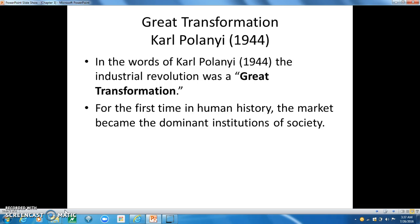In the words of sociologist and historian Karl Polanyi, the Industrial Revolution was a great transformation. What he means by this is that for the first time in human history, the market became the dominant institution of society. The market created by the Industrial Revolution was a social network that gradually extended over the entire world and linked buyers and sellers in a system that governed the distribution of goods of every imaginable type — services of all kinds, human labor power, and new forms of energy like coal and oil.